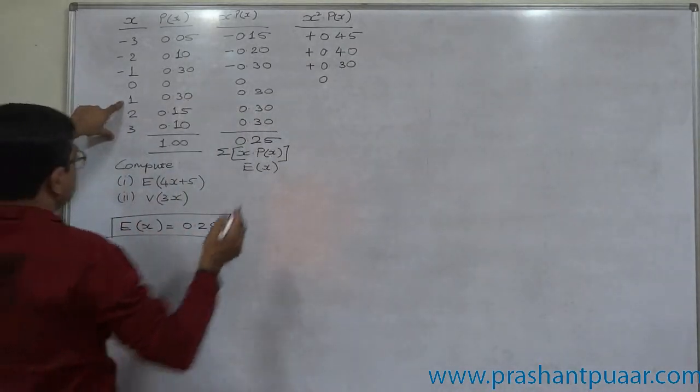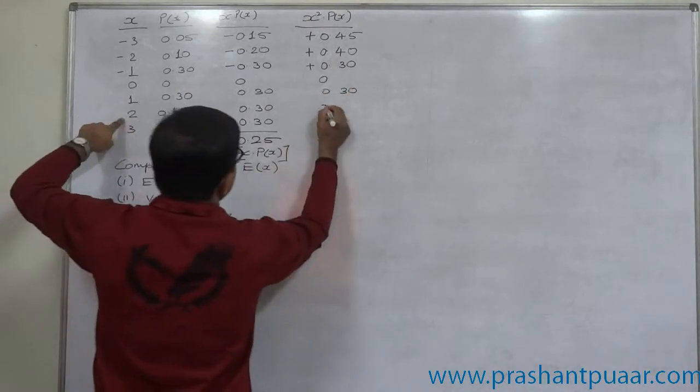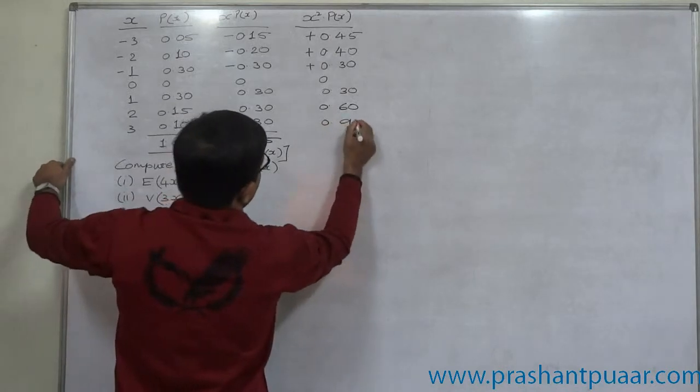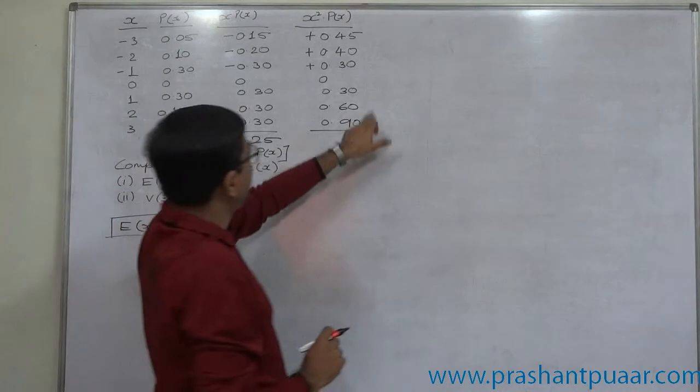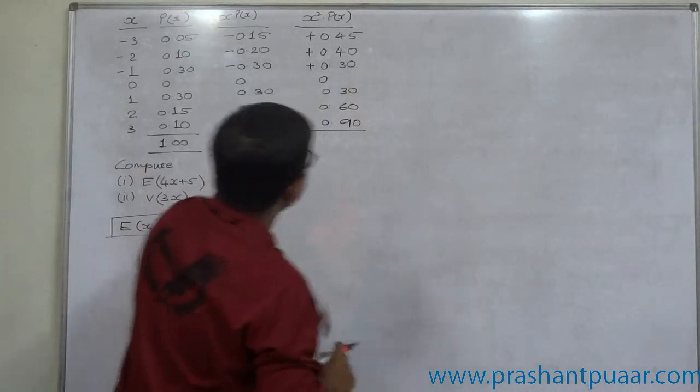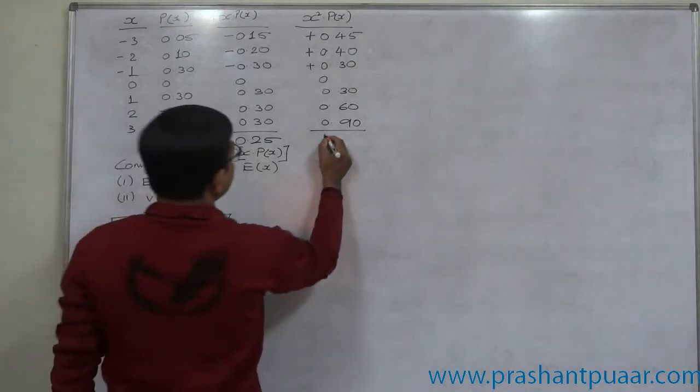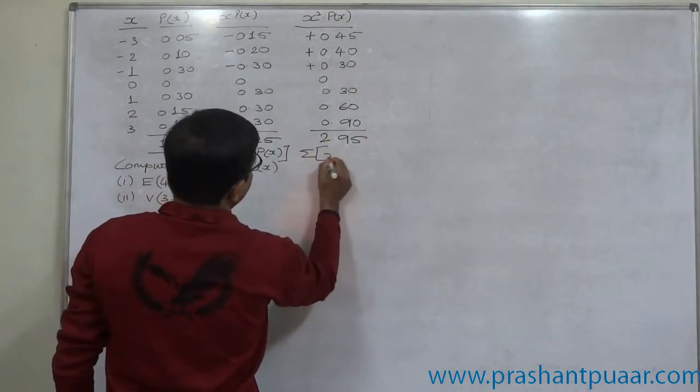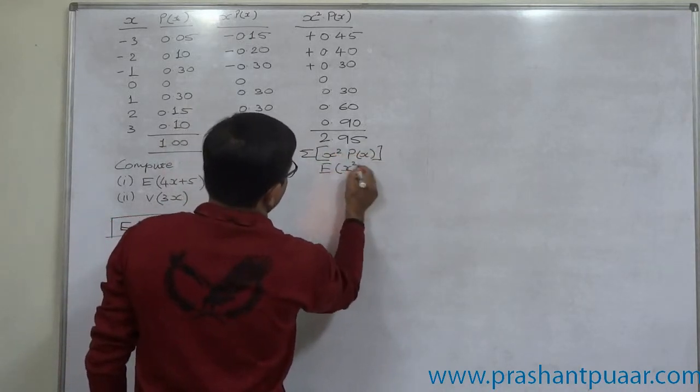0 remains 0. Now positive numbers 1 into 0.3, 0.3, 2 into 0.3, 0.6, 3 into 0.3, 0.9. Positive summation is 1.8 and this positive summation is 1.15. So total comes to 2.95. This is sigma x square into p of x or E of x square.